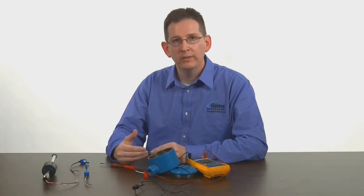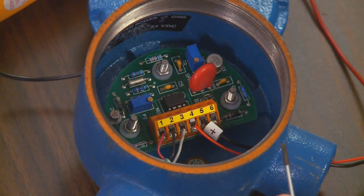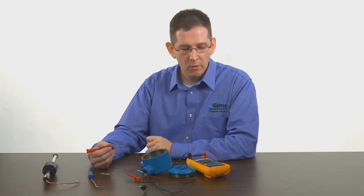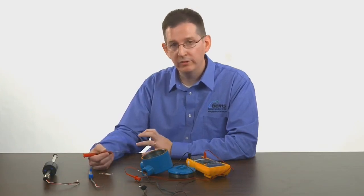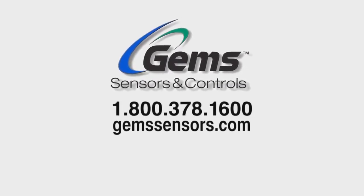Once you've completed the calibration process, the signal conditioner is ready to be used on transmitters of any length. Should you have any questions on this calibration procedure or any technical questions on any GEMS product line, feel free to give us a call at 1-800-378-1600. Thank you.